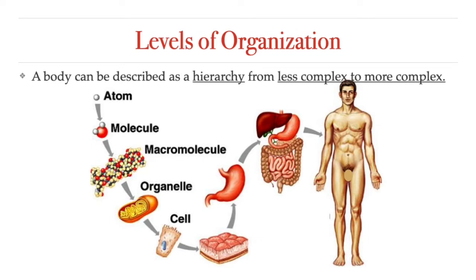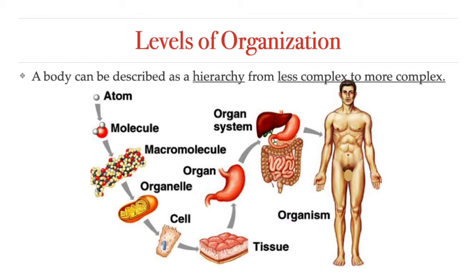Multicellular organisms like humans are made up of many cells. The cells in complex multicellular organisms are organized into tissues — groups of similar cells that work together to perform a specific task. Organs are structures made up of two or more tissues organized to carry out a particular function. Groups of organs with related functions make up the different organ systems, and organ systems work together to form an entire organism.